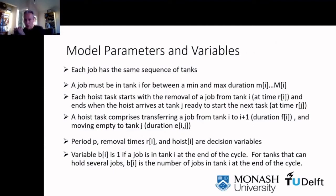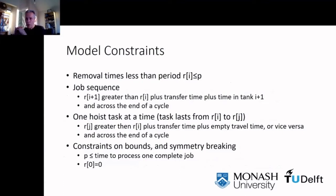Our model has as parameters the number of tanks, minimum and maximum times a job must remain in each tank, the time for the hoist to move a job to the next tank, and the time to travel empty between each pair of tanks. The variables are simply the removal time within a single period of a job from each tank, the hoist that does it, and the length of the period. A derived variable records the jobs in tanks at the end of a period. We also add a symmetry breaking constraint, R0 equals 0.